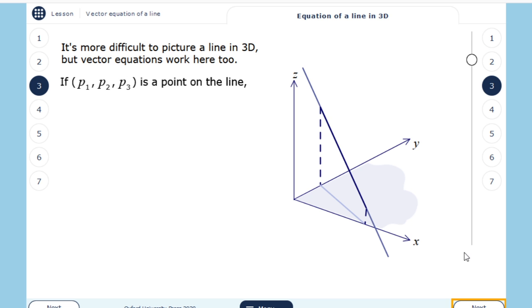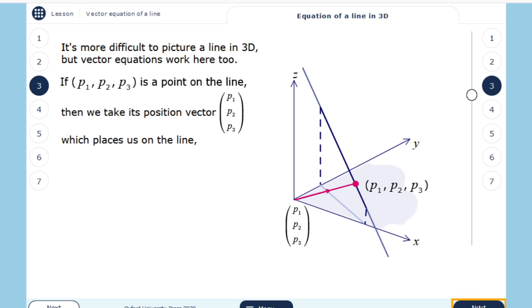If I have a point p1, p2, p3 which is on the line, lies on the line, then we will take again the position vector of this point starting from the origin of the axis, which will place us on the line.